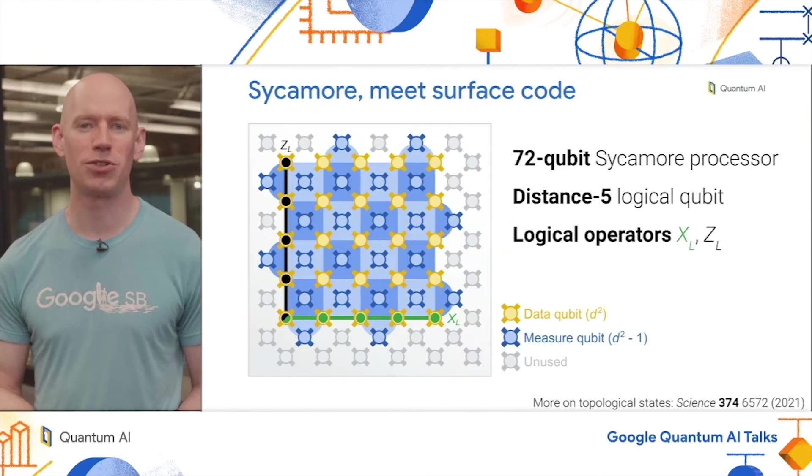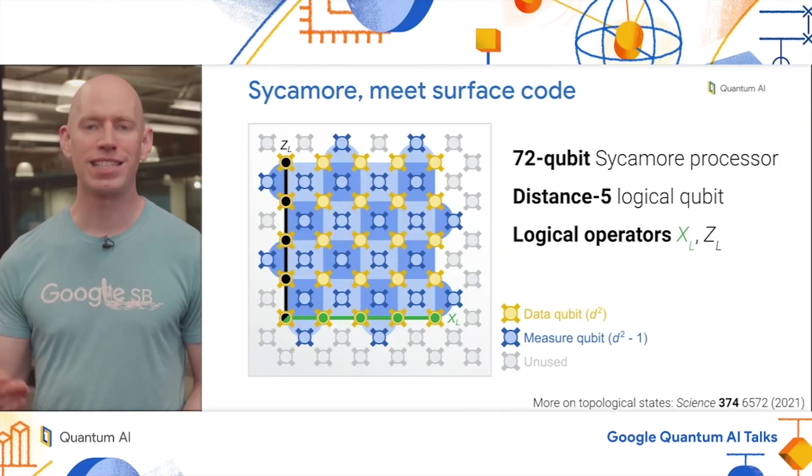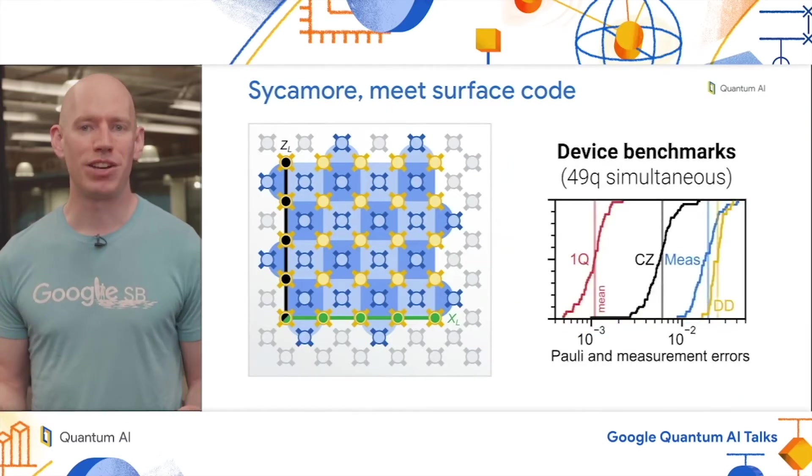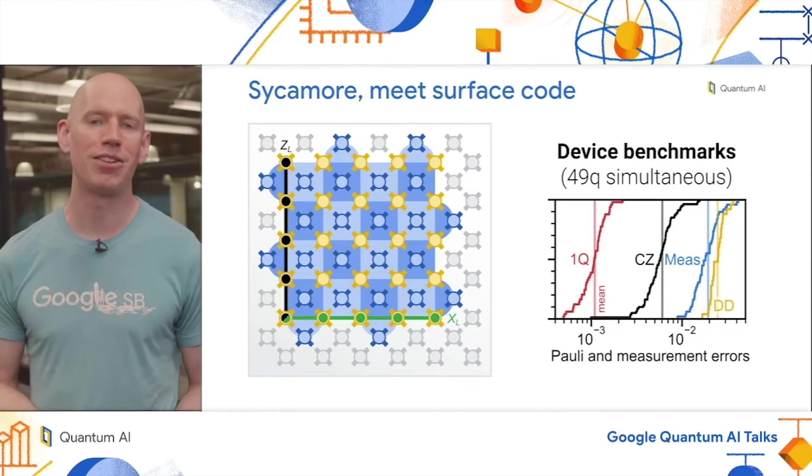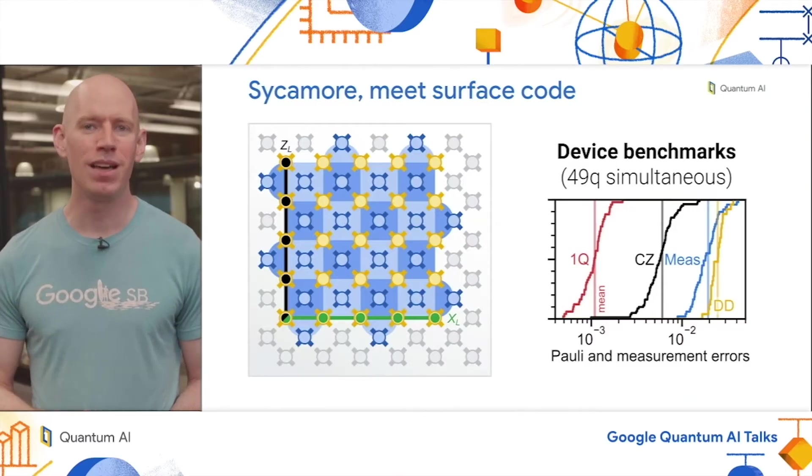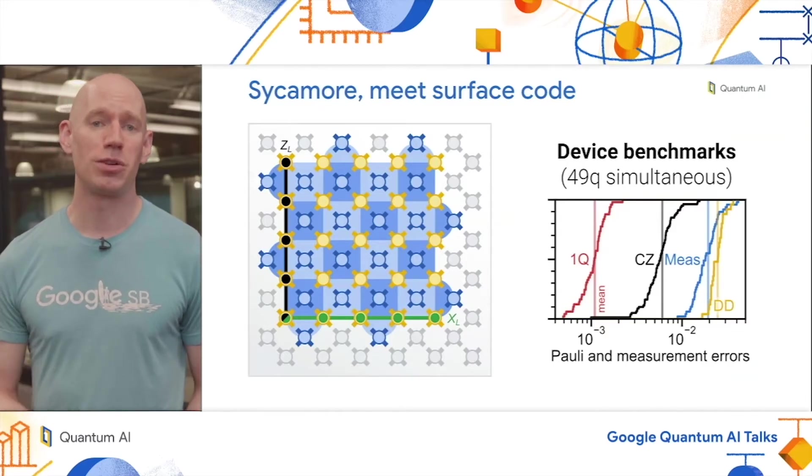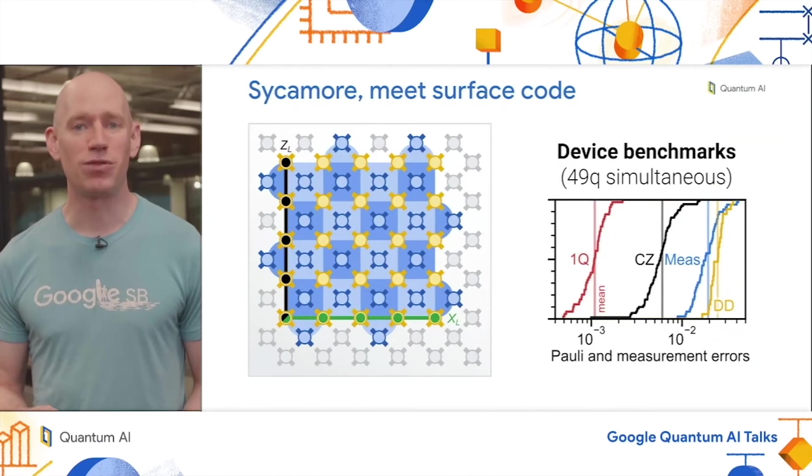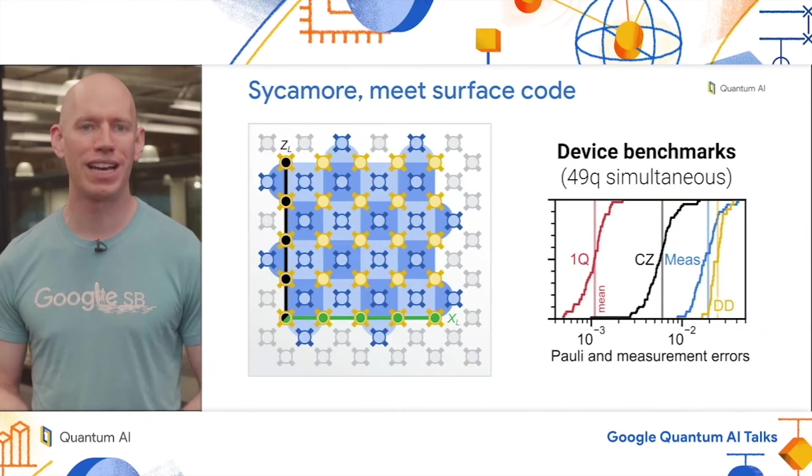A way to grab hold of that logical state is using these logical operators X and Z, which anti-commute with each other and cross the array from one side to the other. That crossing between boundaries underlies a fundamental topological property of this state. We can also benchmark Sycamore on these 49 qubits operating simultaneously and see good results. For single qubit gates, an error probability of about one in 1000. For the CZ gates, about six times 10 to the minus three. For measurement, about two percent. DD stands for dynamical decoupling, which is the data qubit idle during the measurement and reset of the measure qubits.